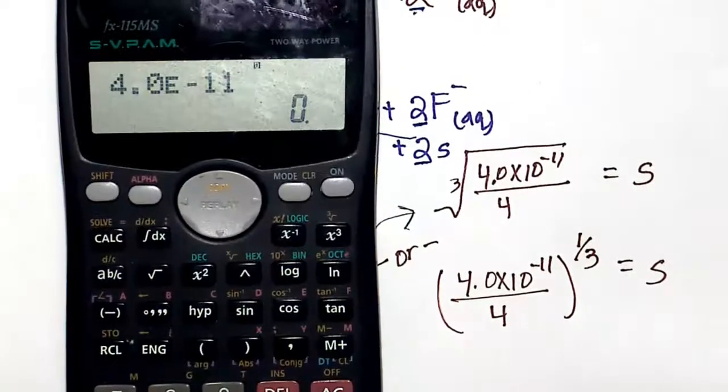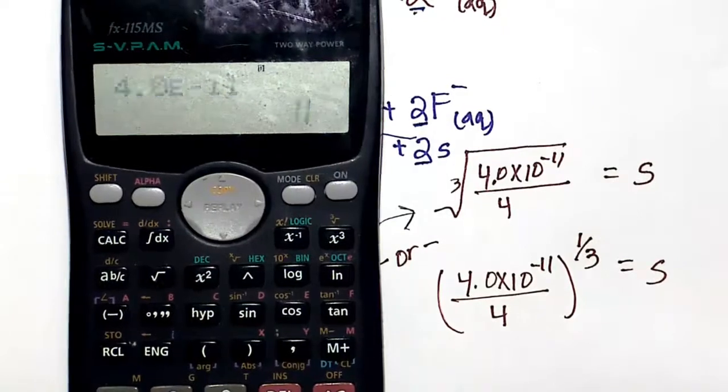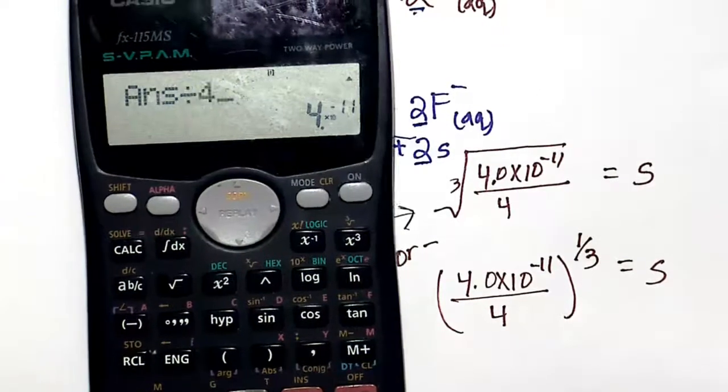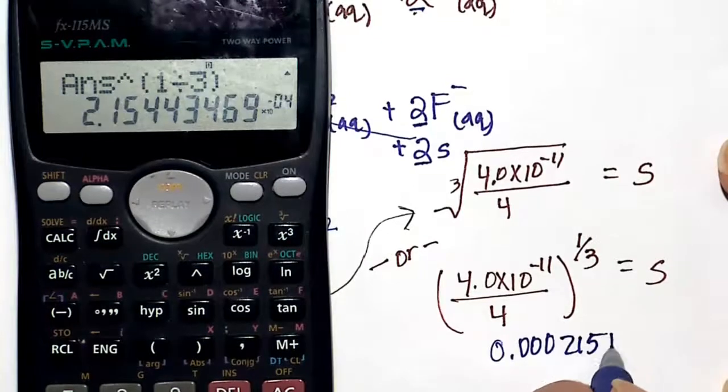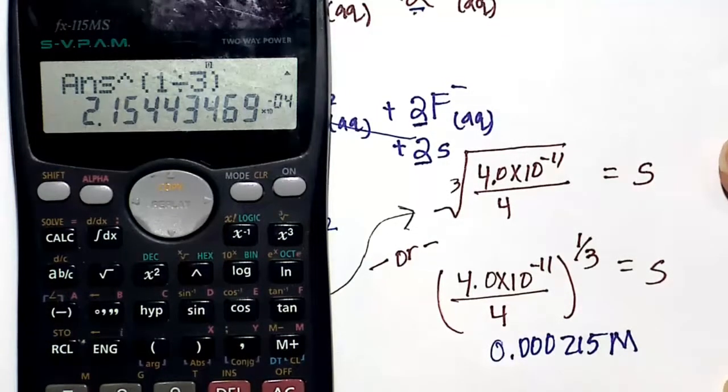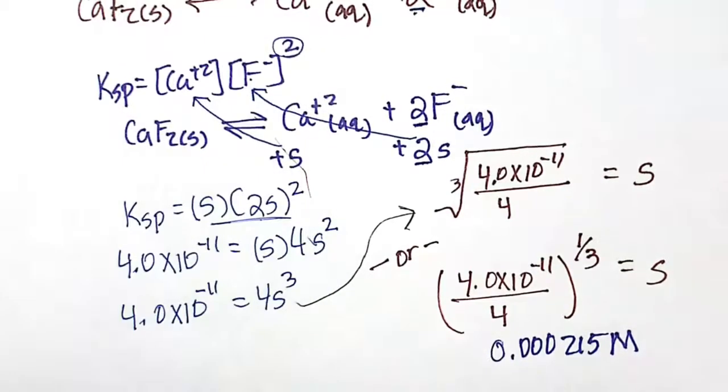So on my calculator here, we have that it's going to be the symbol that's above the caret sign. Either way, you can do it, raise it to the one-third power, take the cube root. The answer here is 0.00030215, so 2.15 times 10 to the minus 4.